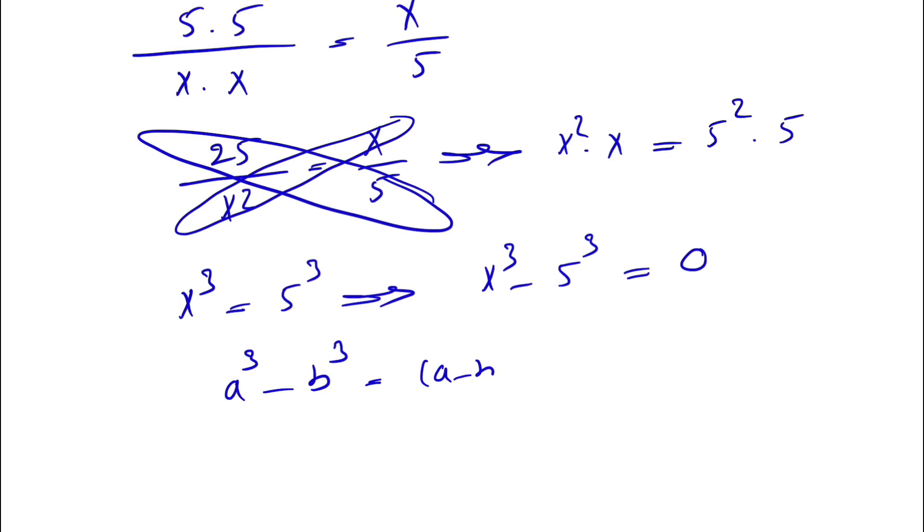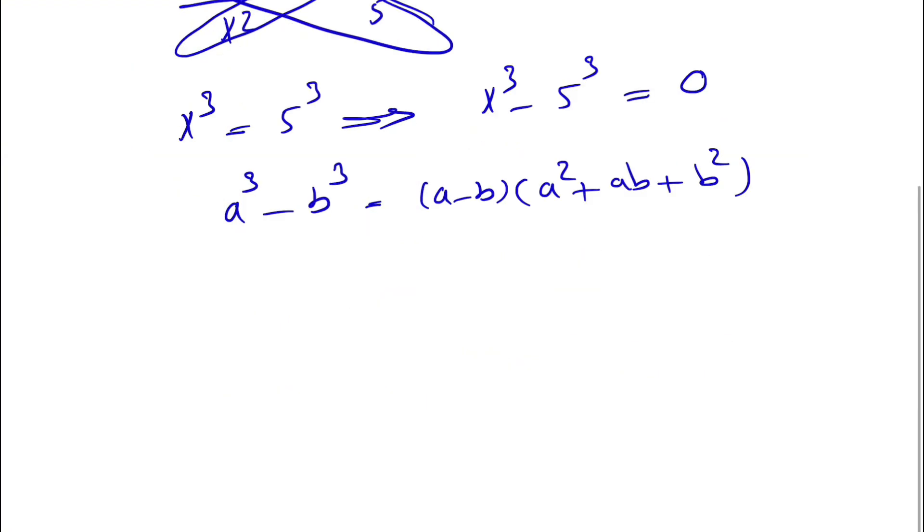Now we have the difference of cubes, which will be a minus b times a squared plus ab plus b squared. So we're going to use this formula in here. We have a minus b, which is x minus 5, times x squared plus ab, which is 5x, plus 5 squared, which is 25, is equal to 0.